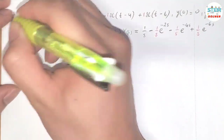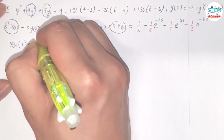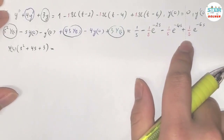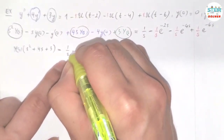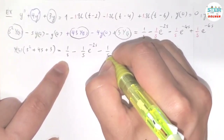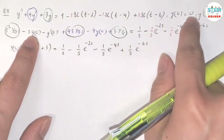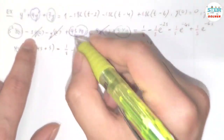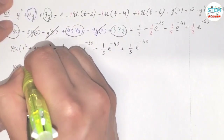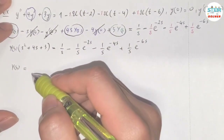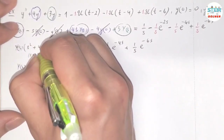Now factor out Y(S). I have (S² + 4S + 3) times Y(S) on the left. On the right side I have 1/S - (1/S)e^(-2S) - (1/S)e^(-4S) + (1/S)e^(-6S). Since Y(0) = 0 and Y'(0) = 0, those terms vanish. Dividing both sides to get Y(S) alone — is the denominator factorable? Yes: S² + 4S + 3 = (S+1)(S+3).